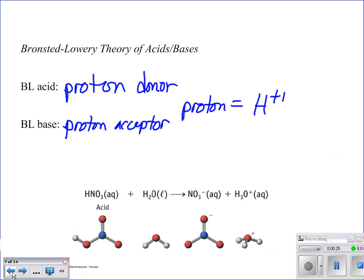The other definition we're looking at is known as Bronsted-Lowry definition. In this case, the acids are proton donors and the bases are proton acceptors. And by protons, we're talking about hydrogen ions.